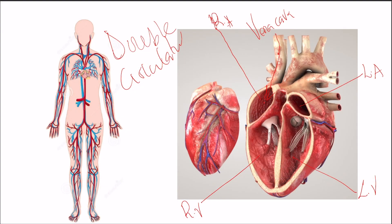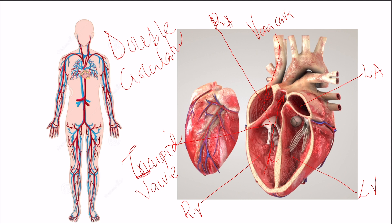Blood from the right auricle drains into the right ventricle via a valve, and this valve is the tricuspid valve — tri because it has three flaps. The right ventricle pumps blood into the lungs through the pulmonary artery. There is a valve inside the pulmonary artery, the pulmonary valve, which is a semilunar valve that will prevent backflow of blood into the ventricle.